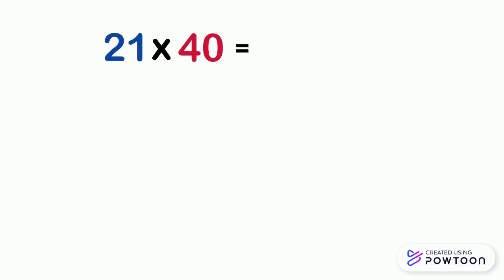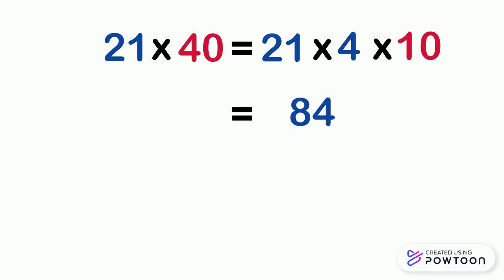Now multiply 21 by 40. 21 times 40 equals 21 times 4 times 10. 21 times 4 equals 84, then multiply 84 by 10, it gives us 840.